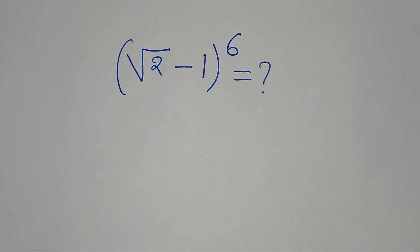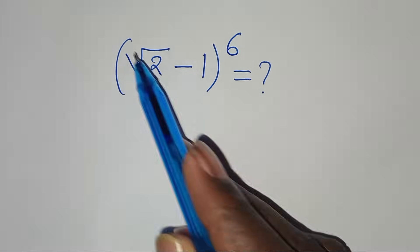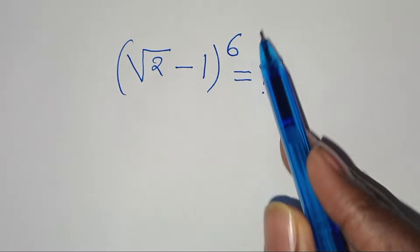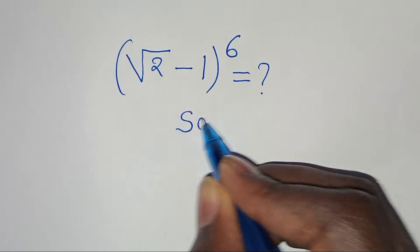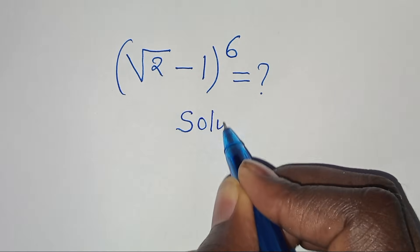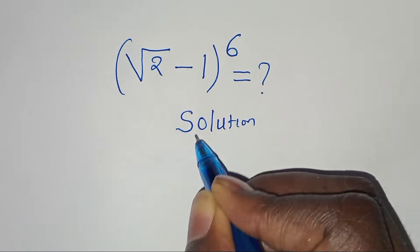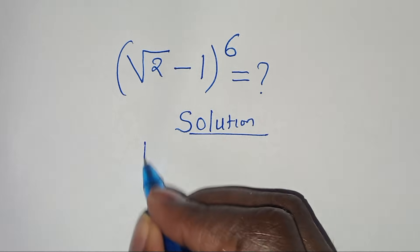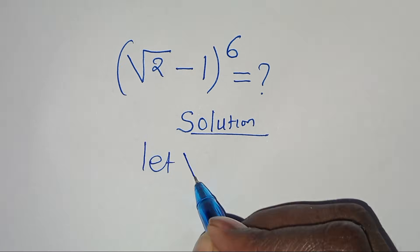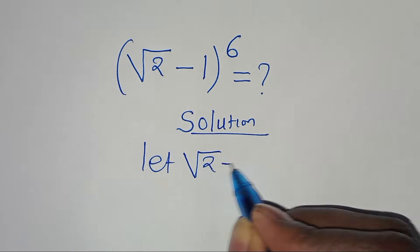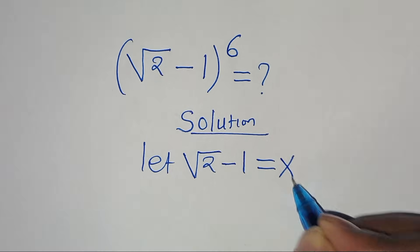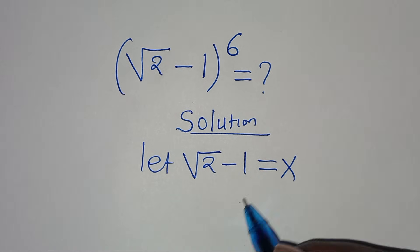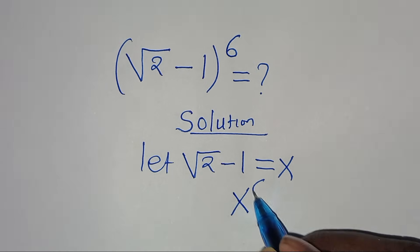Hello everyone, you are welcome to solve this nice math problem which is the square root of 2 minus 1 to the power of 6. Now let's provide a solution from here. The first step is to let square root of 2 minus 1 be equal to x. So the question is: what is x to the power of 6?